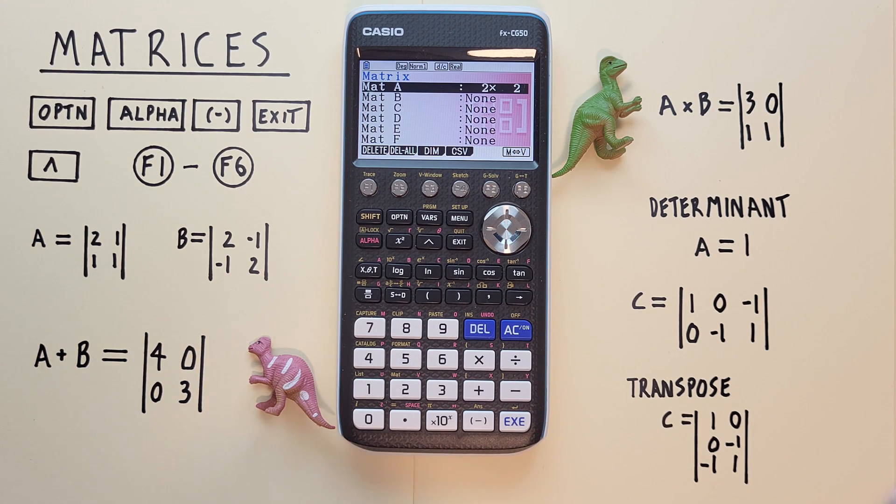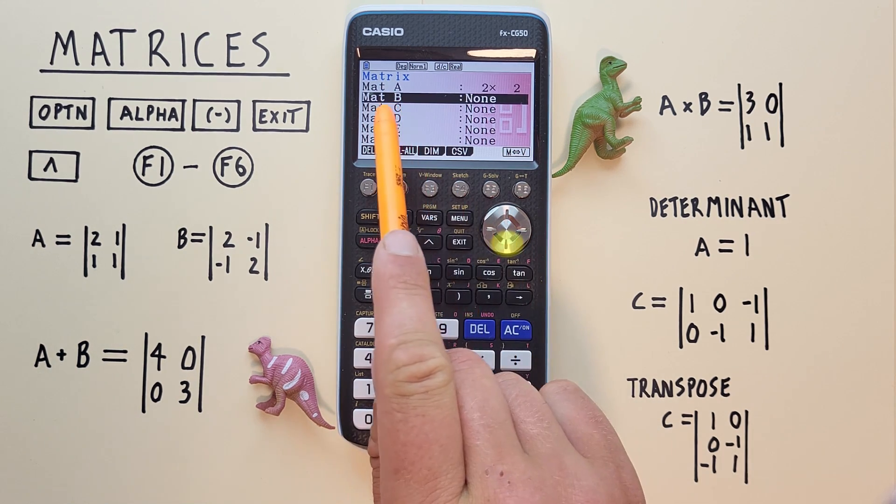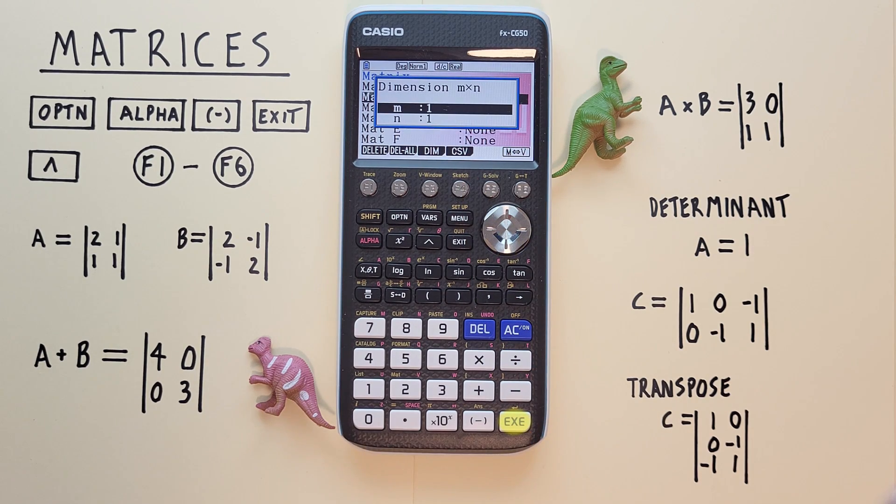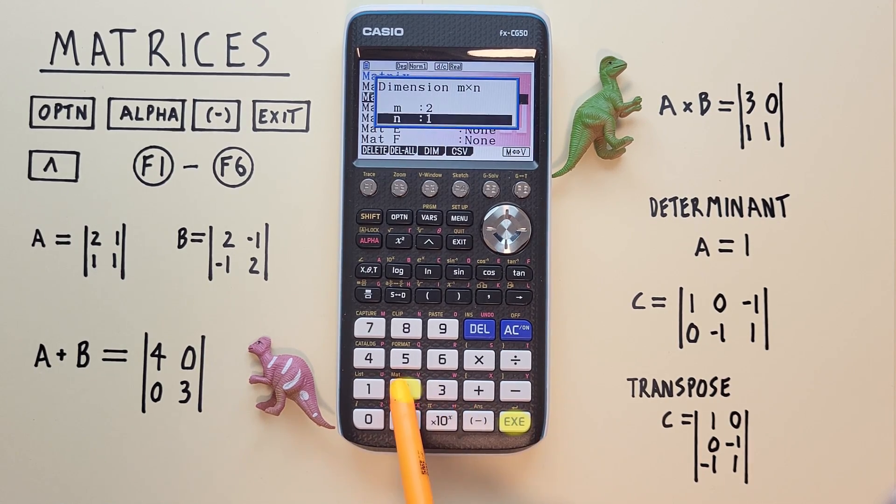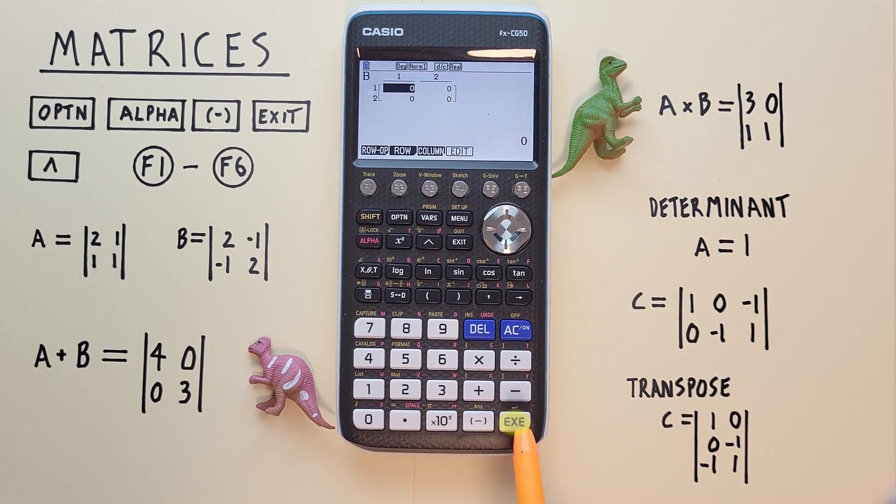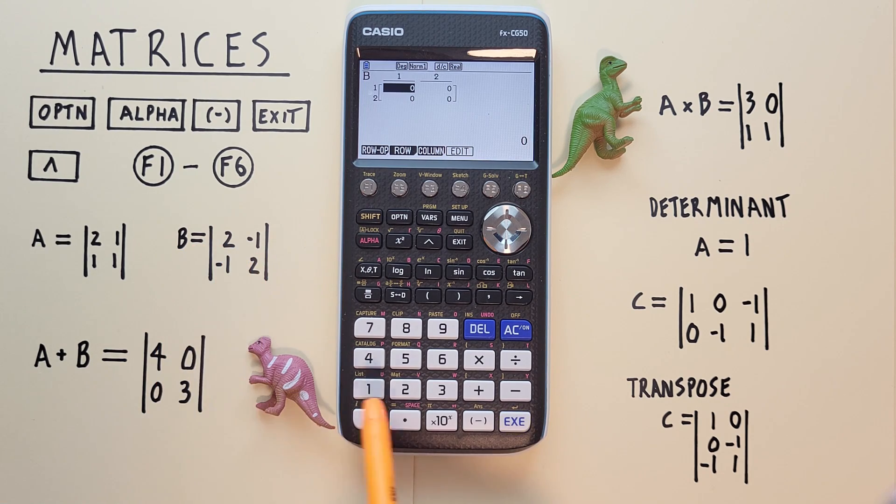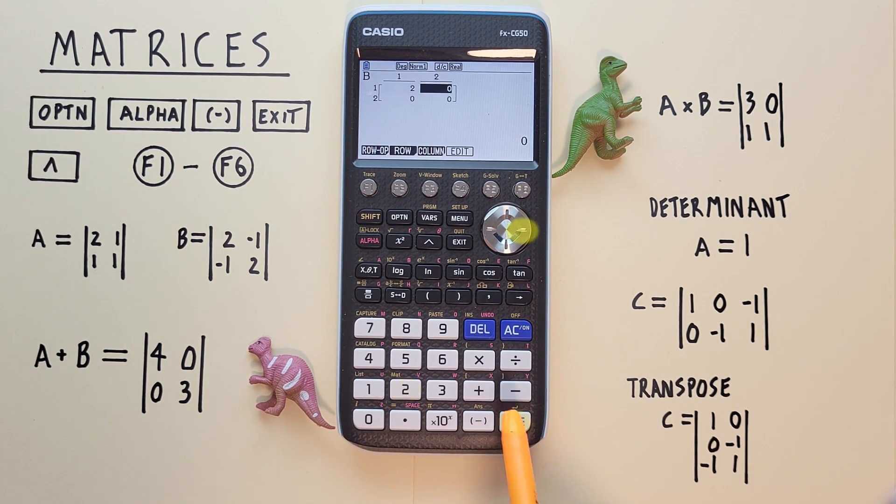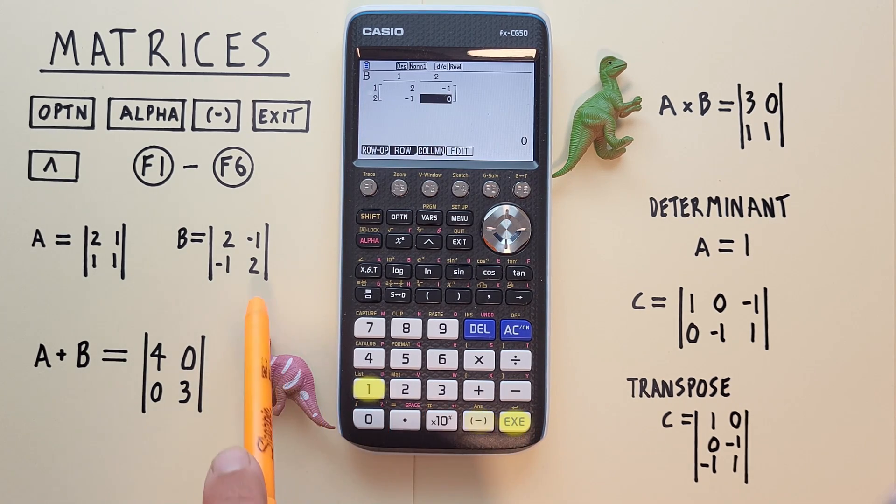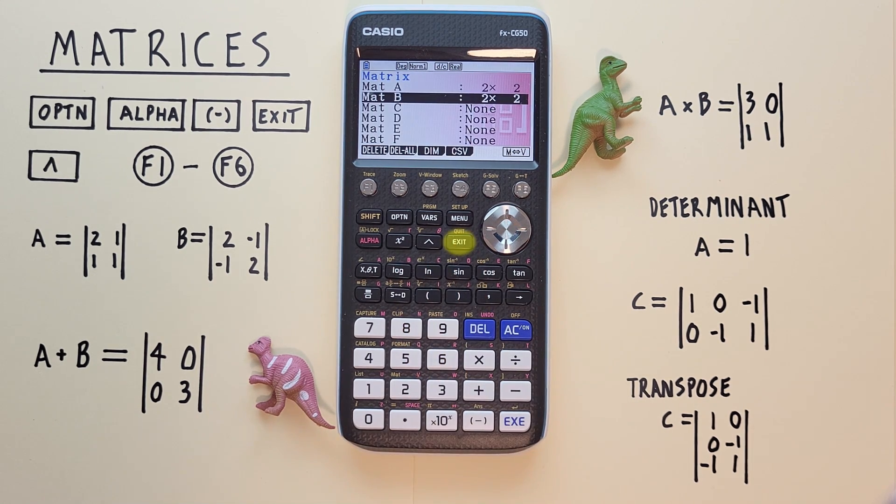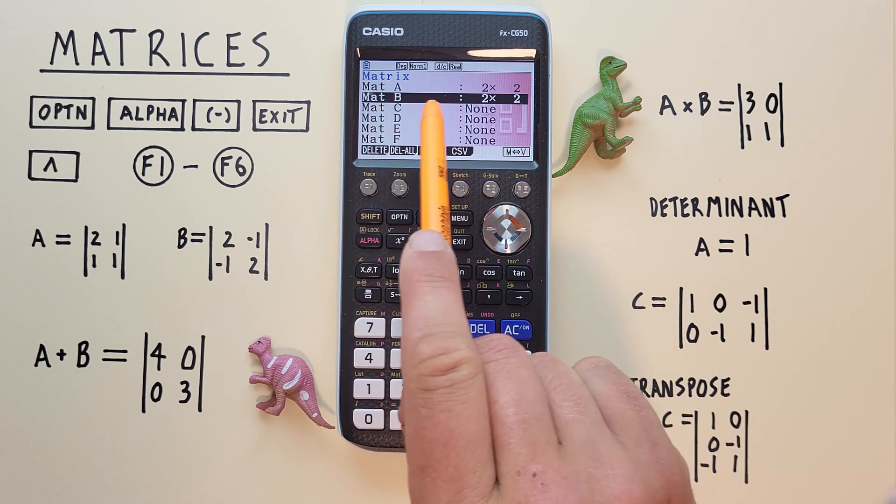Let's enter our B matrix. Scroll down to B, so it's highlighted, hit EXE, and then tell our calculator the dimensions we want, which is 2 by 2. Hit EXE and enter our B matrix: 2, negative 1 (remember the negative key), negative 1 again, and 2. There we go. We've entered our B matrix. When we're done, we can exit, and now we see we have both our A and B matrices saved in our matrix menu.